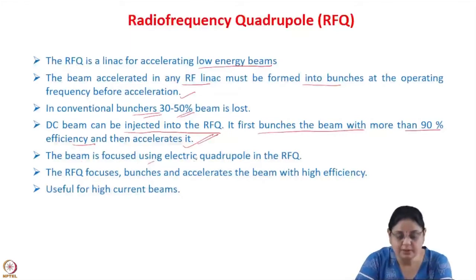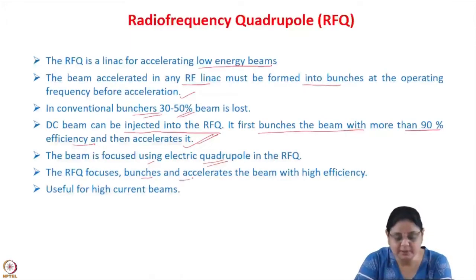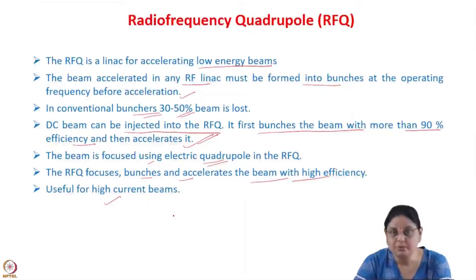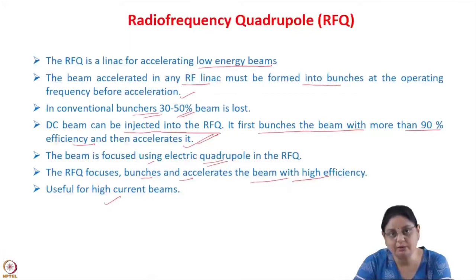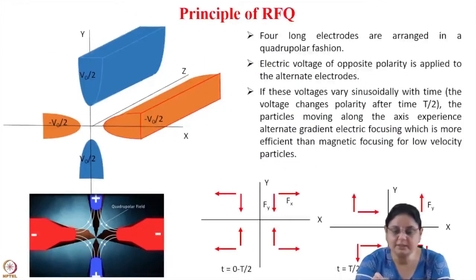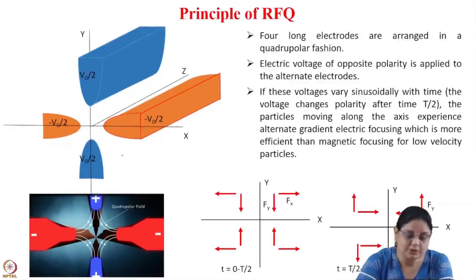The RFQ first bunches the beam with more than 90 percent efficiency and then accelerates the beam. The beam is focused in the RFQ using electric quadrupoles. The RFQ thus focuses, bunches, and accelerates the beam with high efficiency. This is particularly useful for high beam currents because focusing is provided throughout the entire length of the RFQ. Now let us see the working principle of the RFQ.